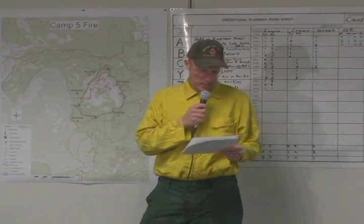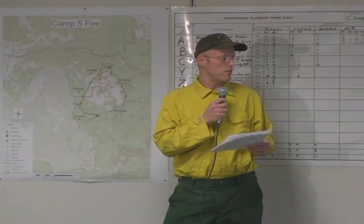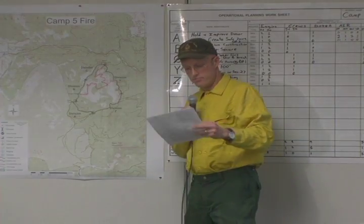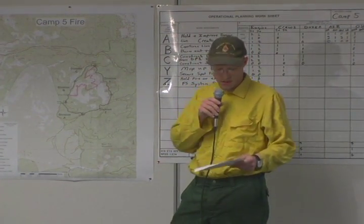Fire weather — incident meteorologist: good morning. Expecting sunny conditions this morning, becoming partly sunny this afternoon with a chance of afternoon thunderstorms. Maximum temperature about 92 degrees. Minimum relative humidity 20%. Winds northeast this morning at 5 to 10 mph, becoming southeast at 5 to 10 this afternoon with gusting, erratic winds near any thunderstorms. Probability of precipitation about 30% this afternoon. Haines Index is 5; LAL is 1 this morning and 3 this afternoon. A red flag warning is in effect for the fire area tomorrow for hot, dry, and windy conditions.